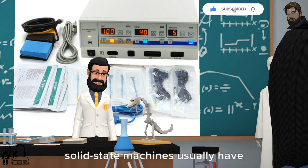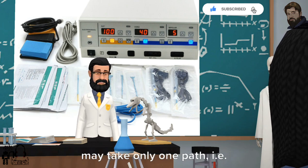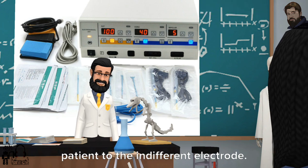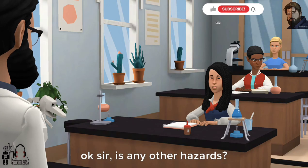Modern solid state machines usually have RF isolated patient circuits. This implies that ideally RF current may take only one path, that is from active electrode through the patient to the indifferent electrode.